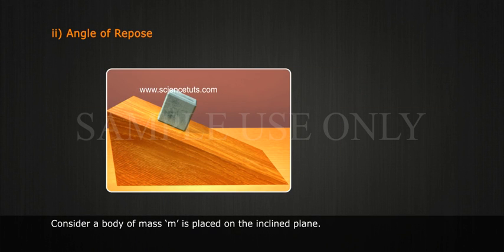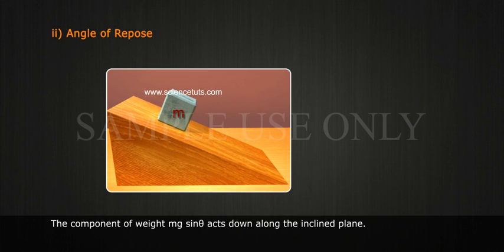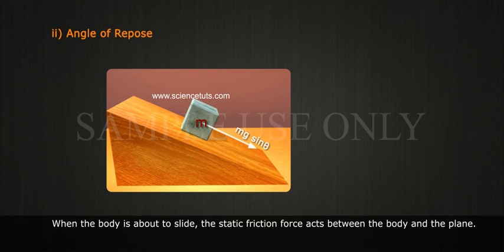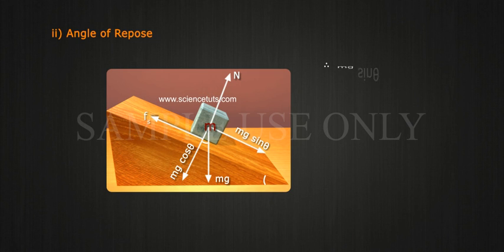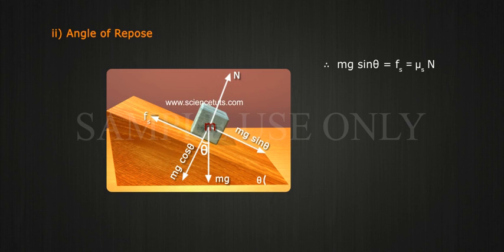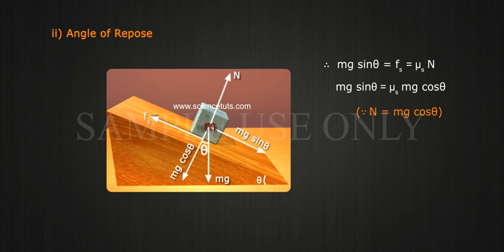Consider a body of mass M placed on the inclined plane. The component of weight Mg sin theta acts down along the inclined plane. When the body is about to slide, the static friction force acts between the body and the plane. Therefore, Mg sin theta is equal to Fs, which is equal to mu S times N. Mg sin theta is equal to mu S times Mg cos theta, since N is equal to Mg cos theta.